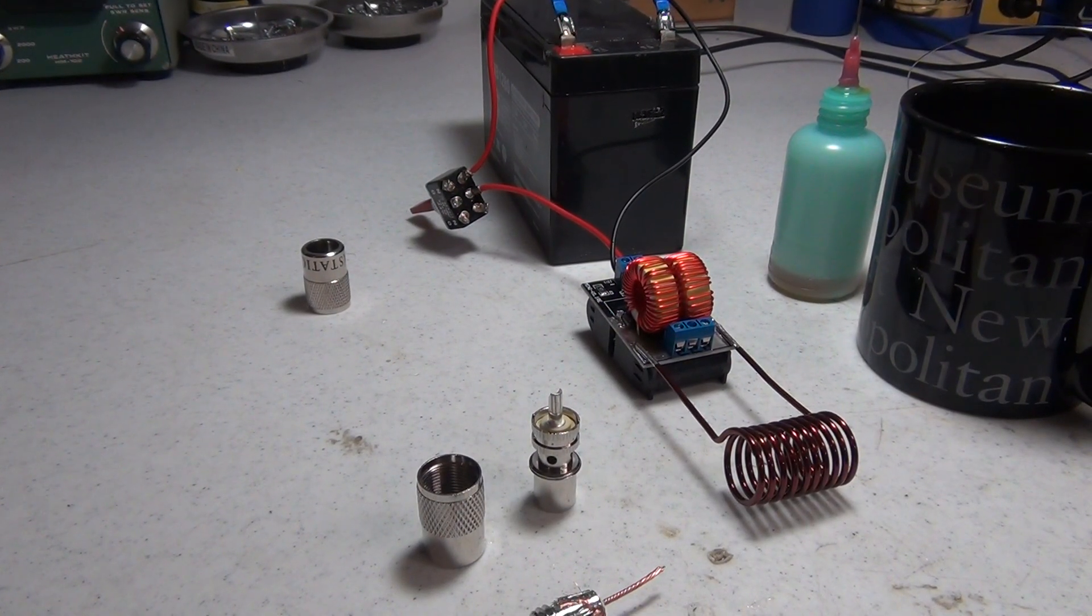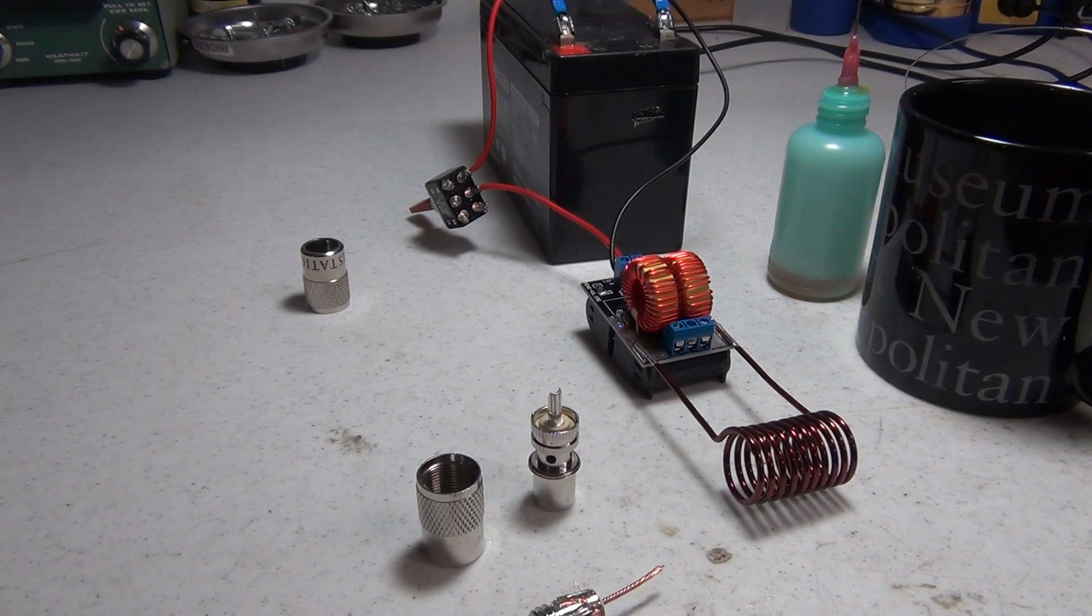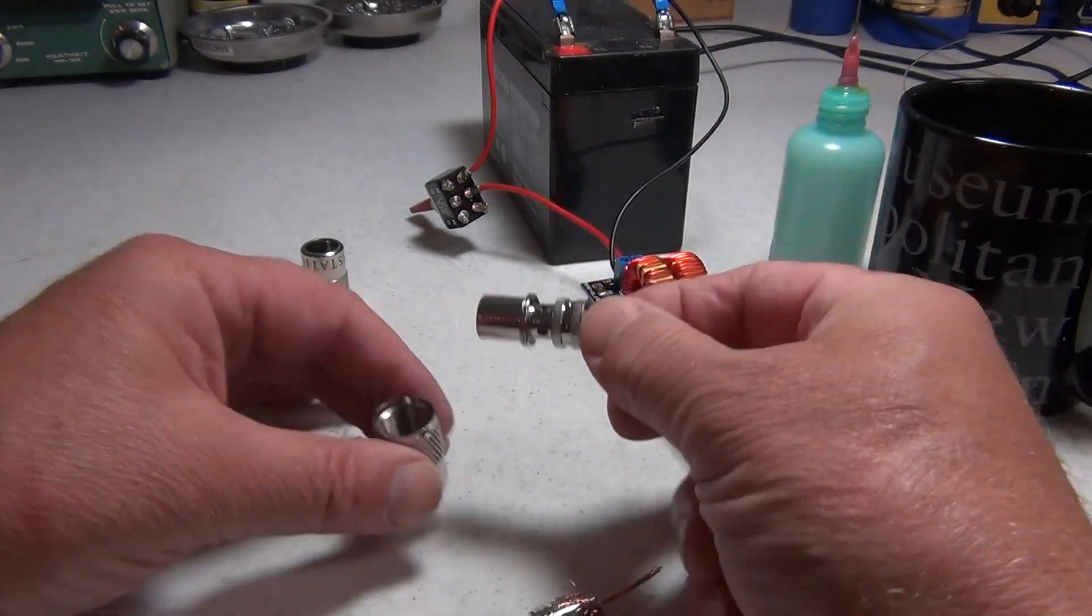This is Alpha Delta Zero Romeo Romeo. I'm going to do a short video here on a different way of connecting PL-259 connectors to some coax.